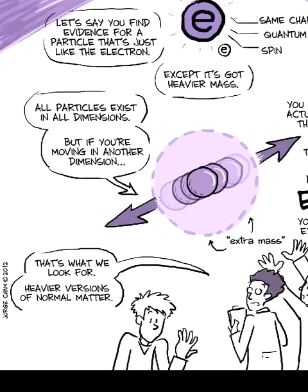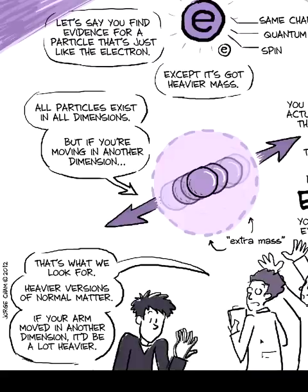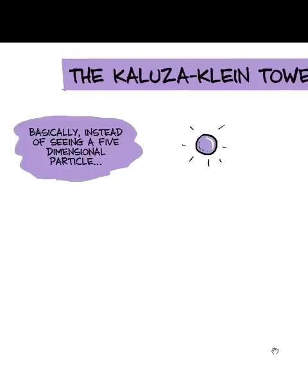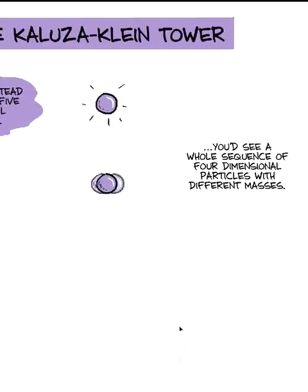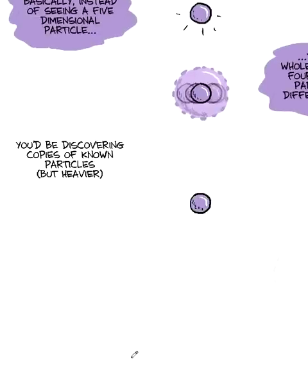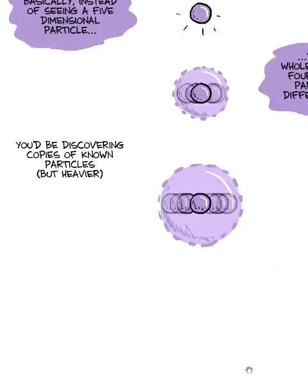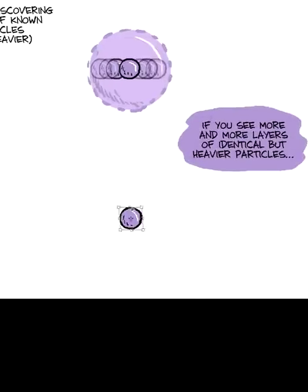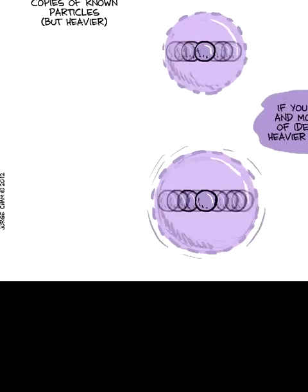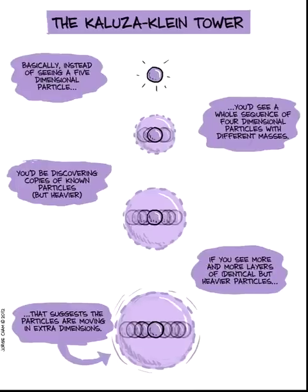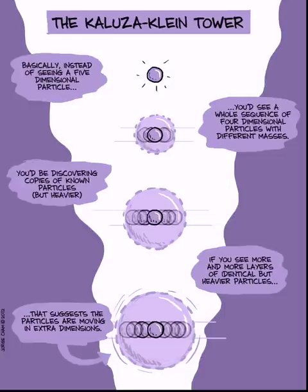All the particles exist in all of the dimensions, right? But if you're moving in this other dimension, you don't see it actually making that motion. We don't see the energy or momentum in the extra dimension. We do see it because of E equals mc squared. We see that as mass in our system. So that's what we're looking for - normal matter but heavier versions of it. It's hidden except for the fact that you seem to be heavier. If your whole arm started moving in this other dimension, it would basically get heavier. A lot heavier. So basically instead of seeing a five-dimensional particle, we'd see a whole sequence of four-dimensional particles with different masses. It's called the Kaluza Klein Tower.